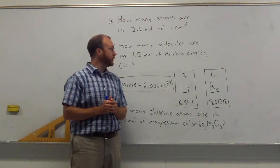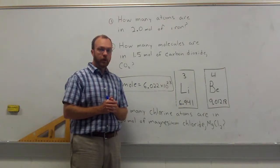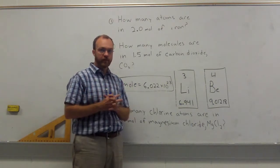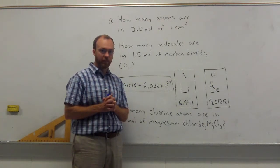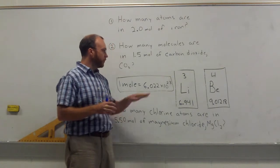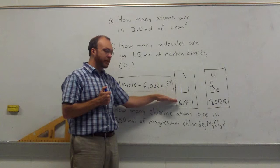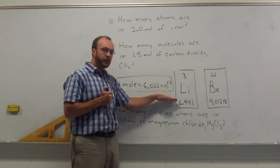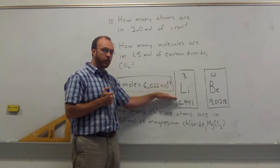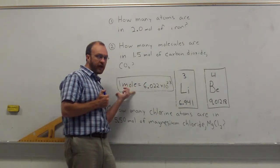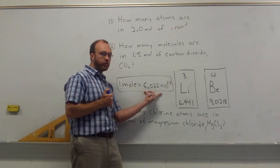We introduced the idea of the mole. A mole is a number that was made up so that one mole of protons or neutrons has a mass of basically one gram. Because of that, we could look at the atomic mass on the periodic table and use it as a molar mass, which would allow us to go from grams to moles or moles to grams. But a mole is actually a number — Avogadro's number of things.